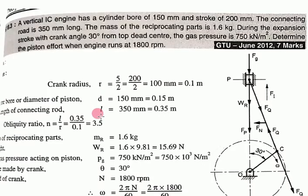Second example is a vertical IC engine. Remember: for horizontal engines, weight is not considered, but for vertical engines we must calculate weight as mass × 9.81. The vertical IC engine has cylinder bore diameter 150 mm and stroke length 200 mm, so crank radius is 100 mm. Connecting rod is 350 mm long, mass of reciprocating parts is 1.6 kg.